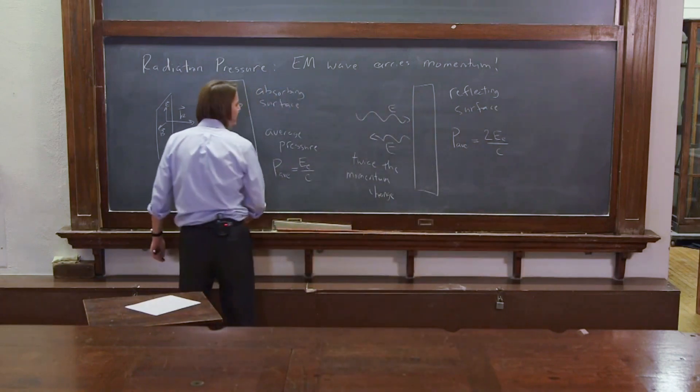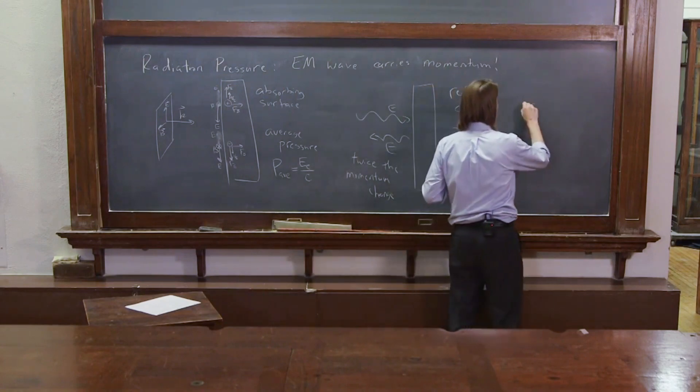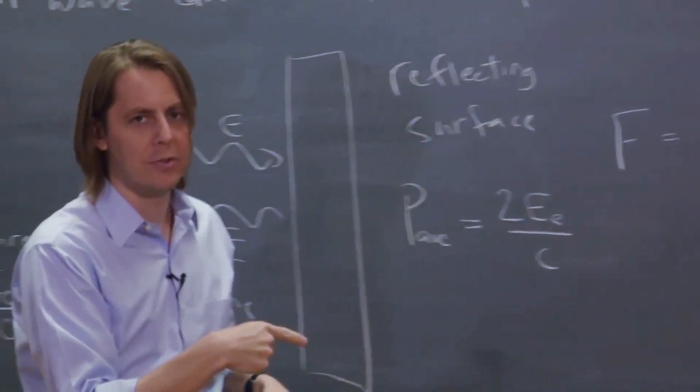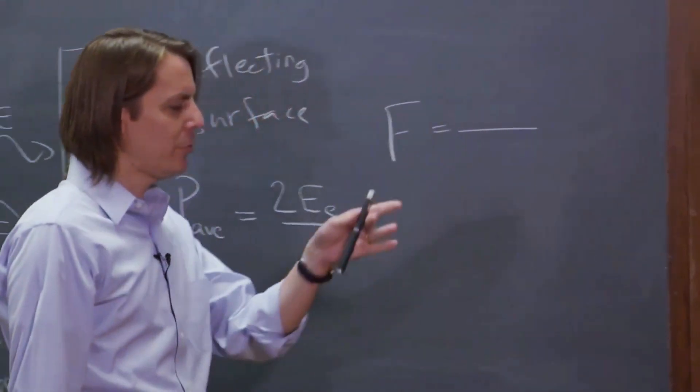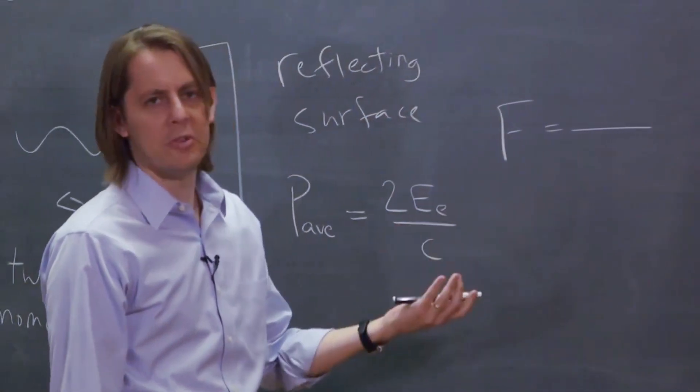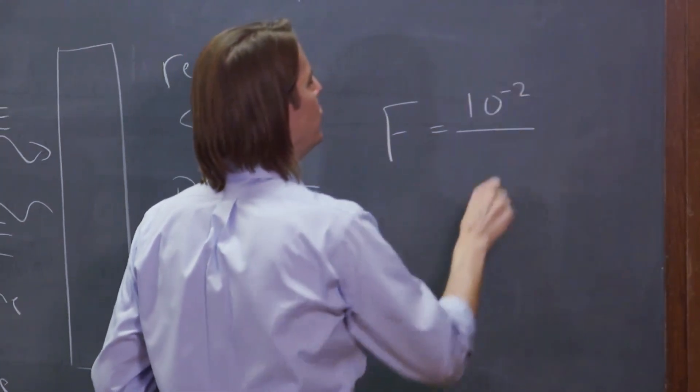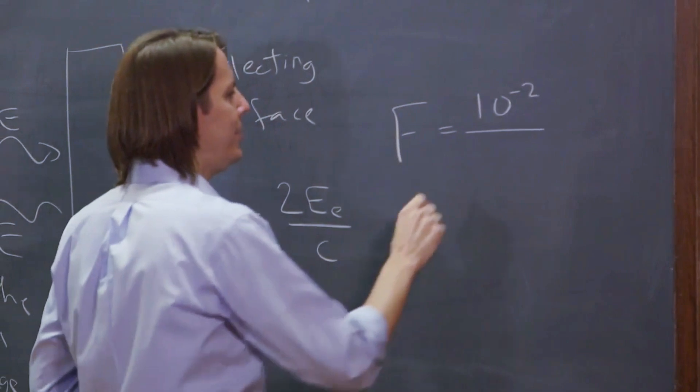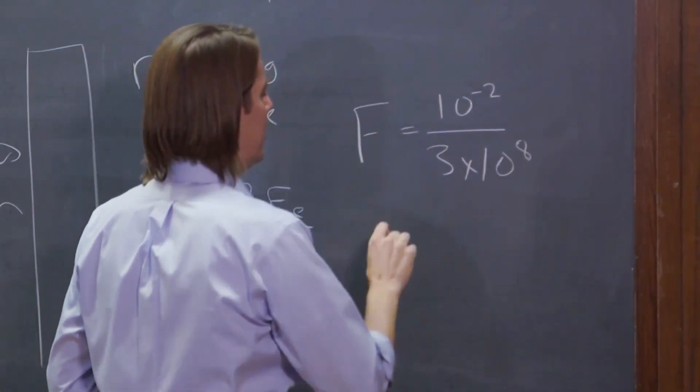Let's calculate if I should be able to see this radiation pressure. So let's see, the force, like I said, isn't the irradiance over the speed of light. It's the power over the speed of light. So power of my laser pointer is say 10 milliwatts. So that would be 10 to the minus 2 watts. And the speed of light is 3 times 10 to the 8. Right?